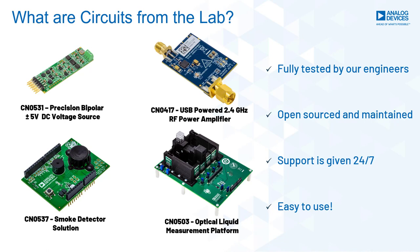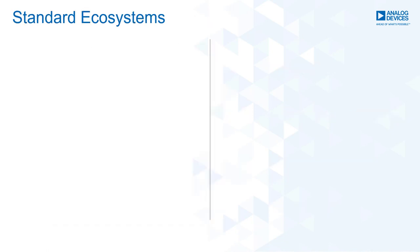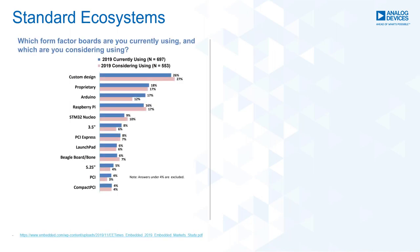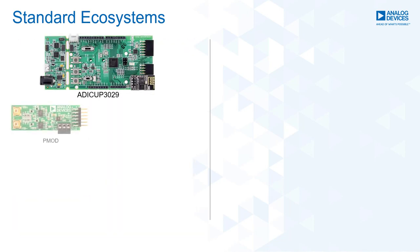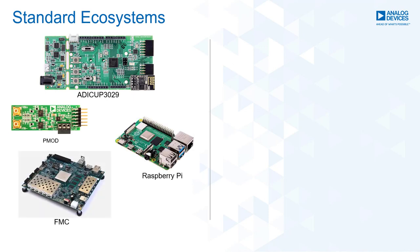One of the best things when working with CFTLs is you don't have to be a systems or software guru to get a reference design up and running, because we make everything easy. One of the ways we accomplish this is by leveraging and developing our designs using standard ecosystems because they're popular and affordable. Some of the most popular ones are Arduino, Raspberry Pi, FMC — which is found on Xilinx or Intel FPGA development boards — and PMOD.